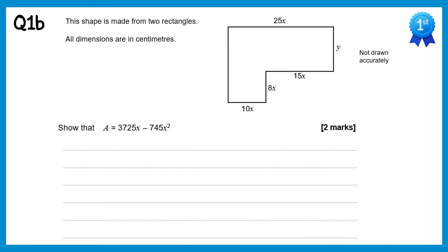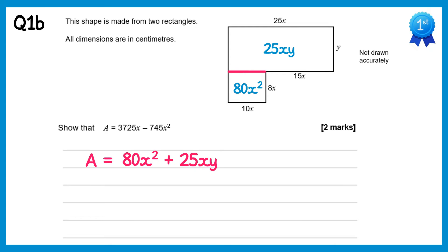For part B of this question we need to work out the area. To do this we'll split the shape into two rectangles. This lower rectangle is 8x by 10x so 8x times 10x is 80x squared, and the upper rectangle is 25x times y so 25xy. So the area equals 80x squared plus 25xy. From part A we showed that y equals 149 minus 33x, so we can substitute y out for that.